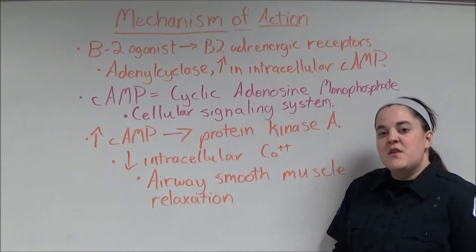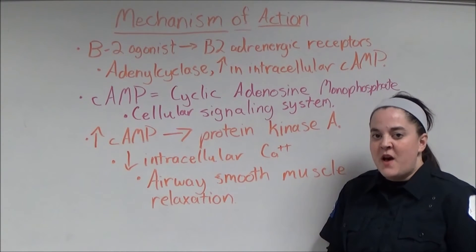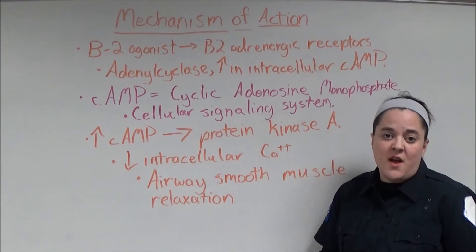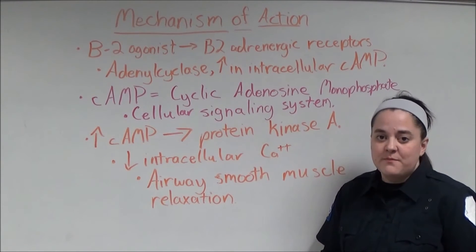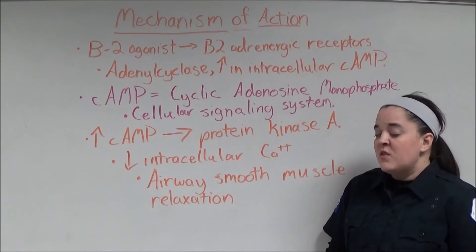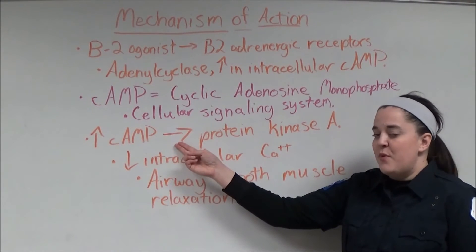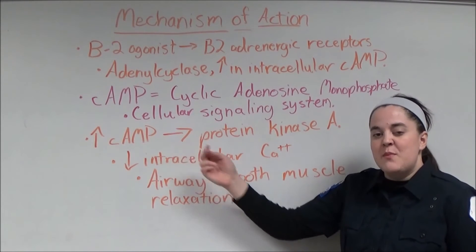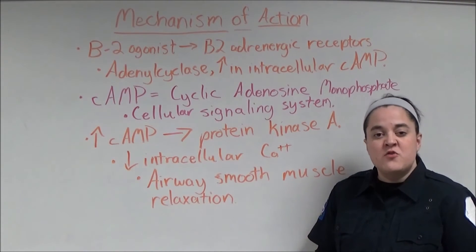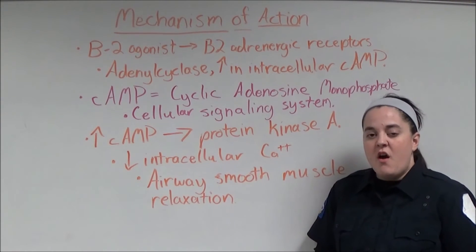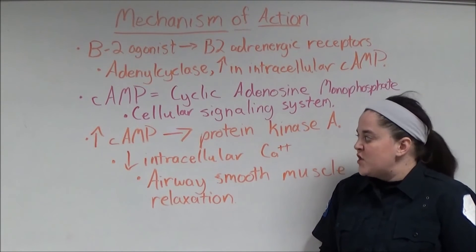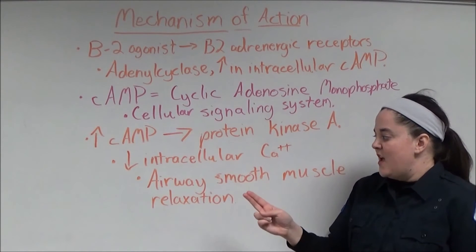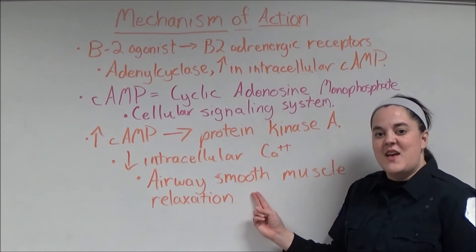cAMP stands for cyclic adenosine monophosphate and is part of the intracellular signaling system within eukaryotic cells. The website also states that the increase in cAMP activates protein kinase A, which inhibits the phosphorylation — or introduction of a phosphate group — of myosin, which leads to a decrease in intracellular calcium and airway smooth muscle relaxation.